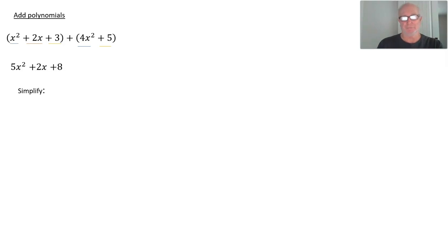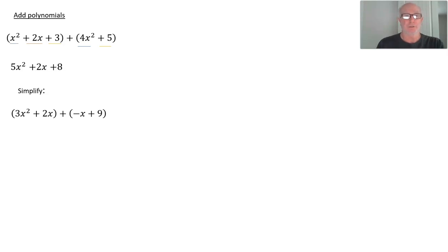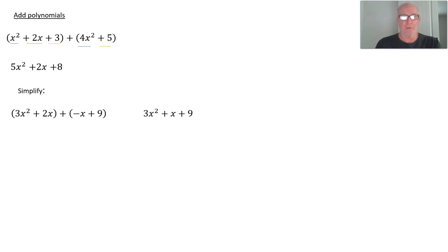Simplify — which is another way of saying perform the operation, like add: (3x² + 2x) + (−x + 9). Pause the presentation, simplify that, and then resume. Adding like terms: there's no other x², so we have 3x². 2x + (−x) = 1x, and then we have a 9. So the answer is 3x² + x + 9.